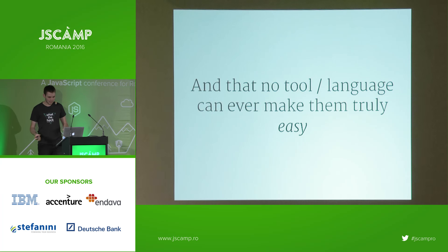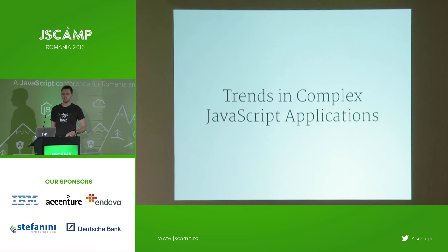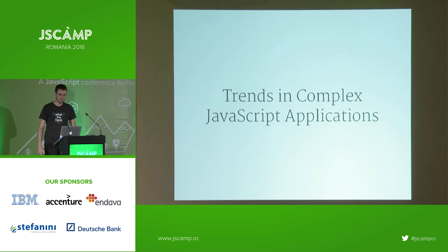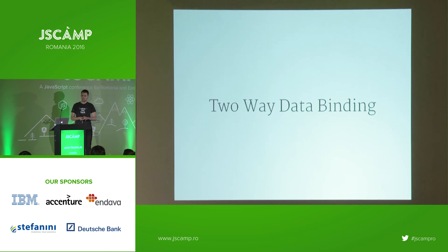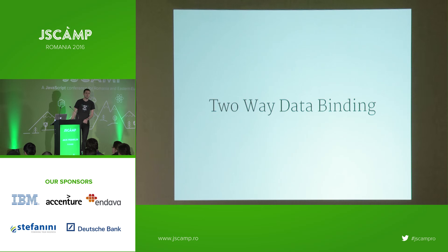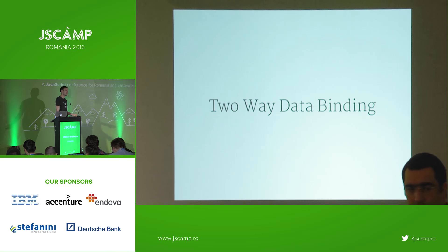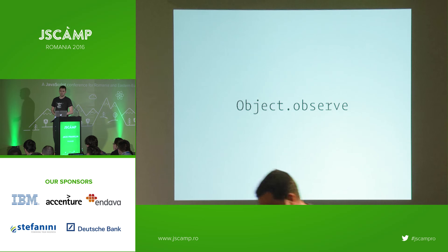We want to enjoy our work and enjoy writing code. If we look at some of the trends in complex JavaScript applications from when they first started to now, we've seen a complete reversal in thought process. We started with two-way data binding — the Angular 1s, the Knockouts — where you had data in JavaScript, referenced it in a template, and a ton of stuff happened behind the scenes to keep those two in sync.